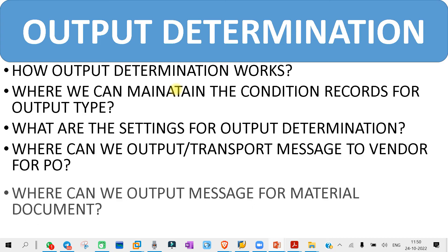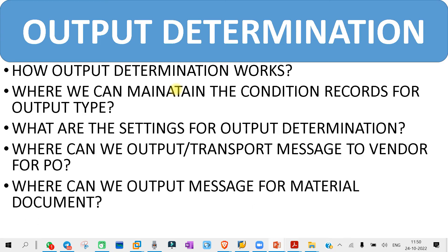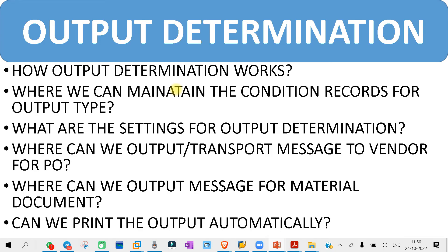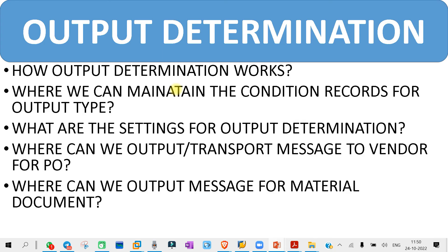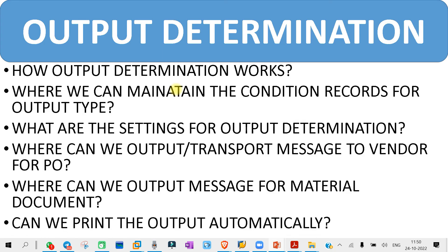The next question is: where can we output the message for a material document? For the material document, you have to see what the T-code is. Next, you might get the question: can we print the output automatically? Meaning, if we are not going to ME9F to output the message for PO to the vendor, can we do it automatically without going to ME9F? You need to see if we can print automatically and where the settings are so that output goes automatically.